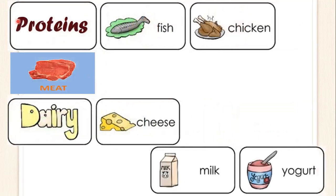Now we have the proteins. The proteins like fish, chicken, and meat. We have the fish, que son los pescados. The chicken and the meat — aquí es exclusivamente la carne, carne de res.